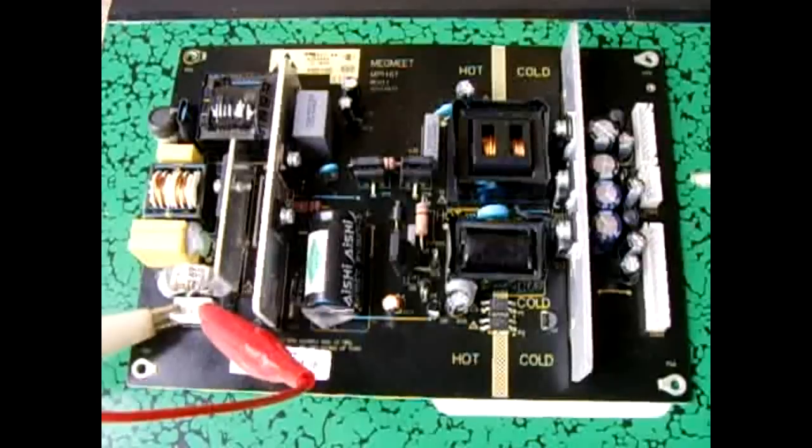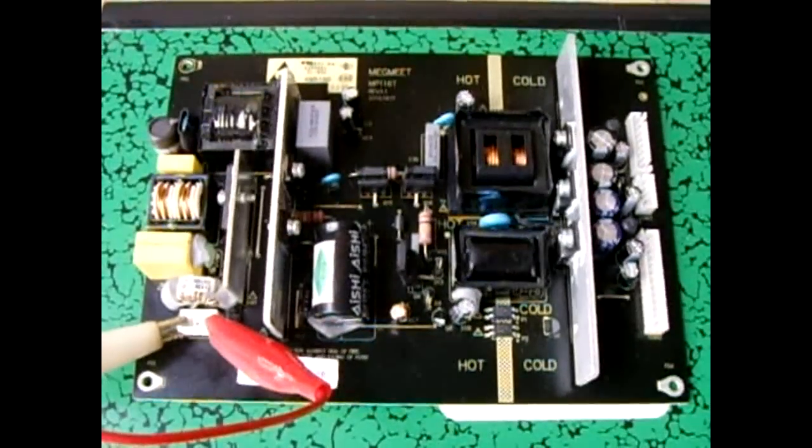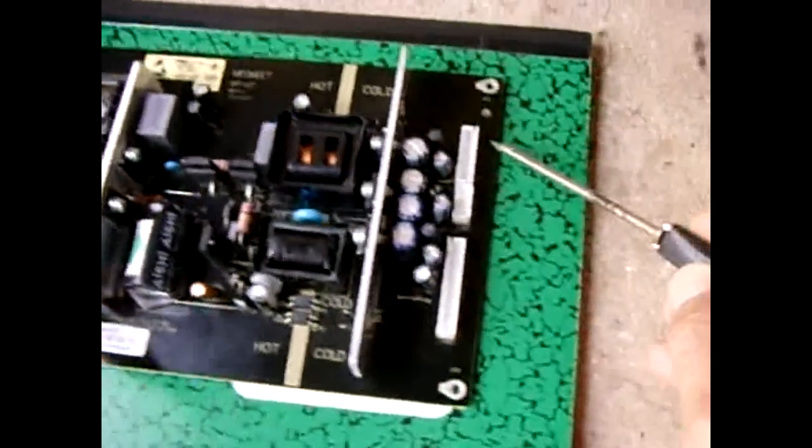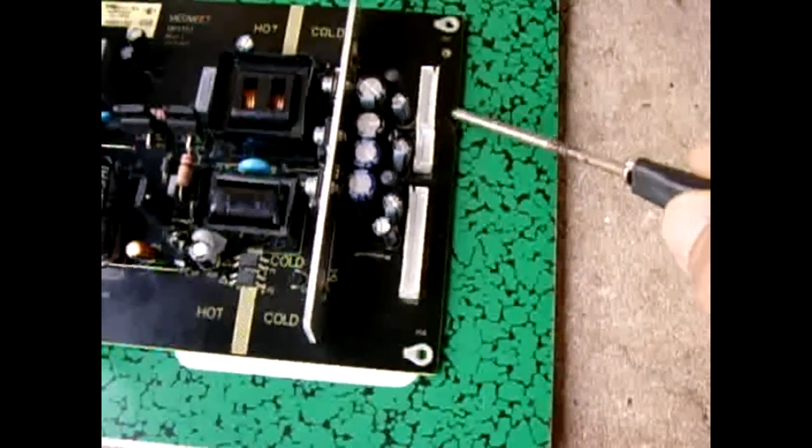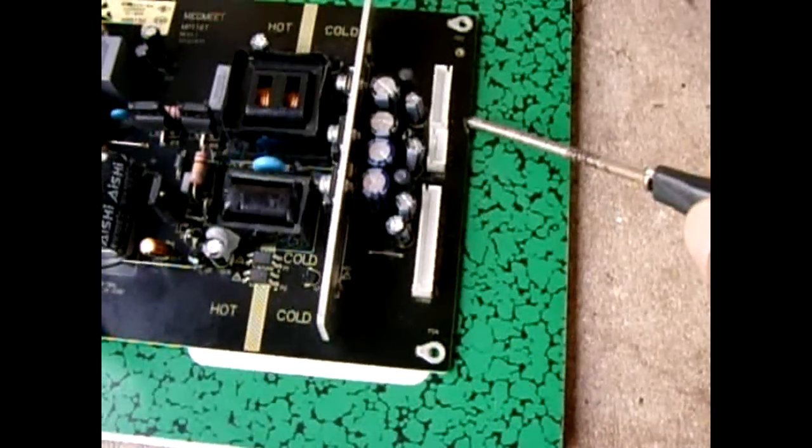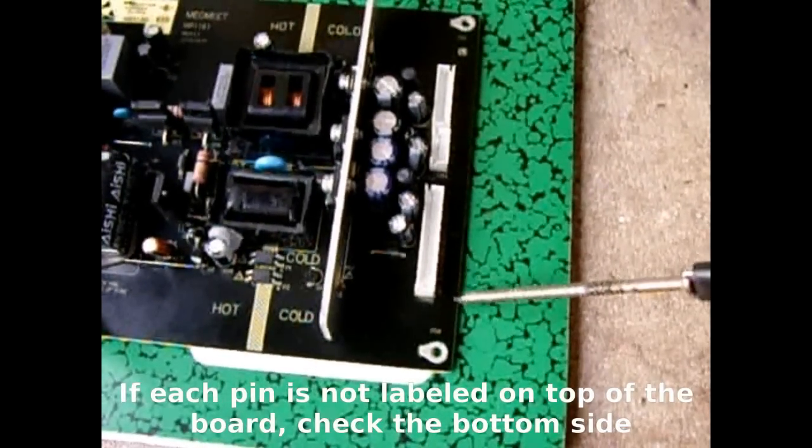At this point, you're not going to be getting any voltage from any of these pins except for one. You're going to want to read all the voltages. Down the side of this board, it says 24 volts, ground, with lines separating them, and then it might say 12 volts, 5 volts, and ground again down here.